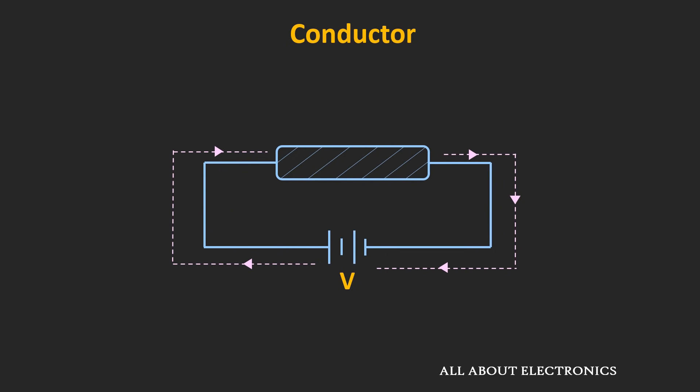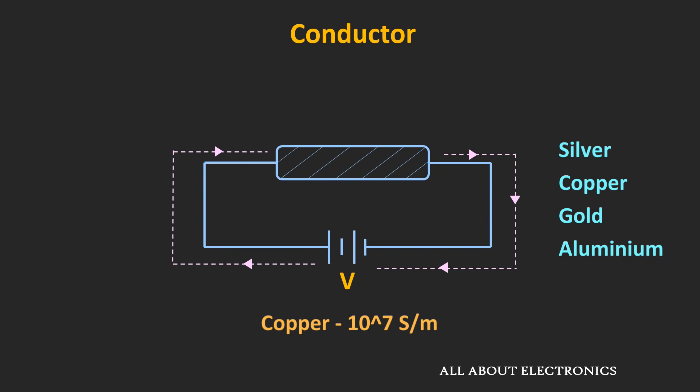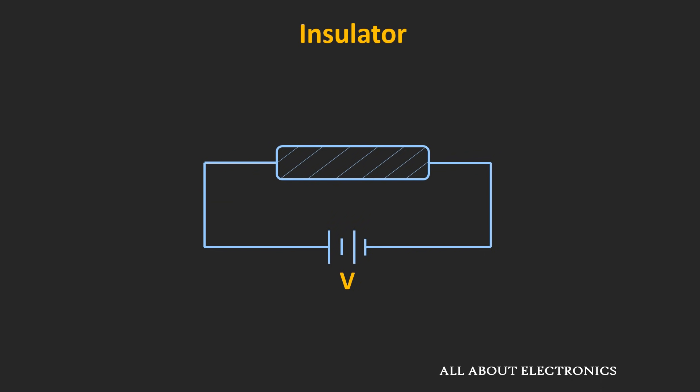The conductor has very good conductivity — whenever voltage is applied to a conductor it allows a generous flow of charge. Silver, copper, gold, and aluminum are a few examples of conductors. Taking copper as an example, its conductivity is roughly around 10 to the power of 7 siemens per meter.